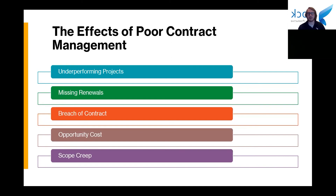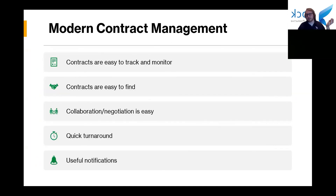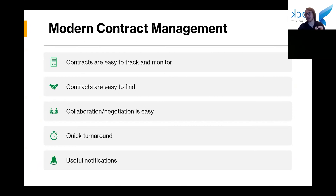So what is modern contract management? Pretty simple. It's essentially making it so that contracts are super easy to access and monitor. It shouldn't be a whole song and dance to find what you're looking for. Once you are able to find it, you should be able to track all of the changes happening within it. Collaboration and negotiation on contracts should be a breeze — it shouldn't require multiple versions of the contract flying around going to different people's emails. You should just be working in one document and track all of the changes therein.